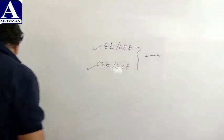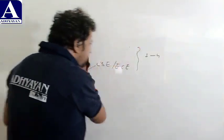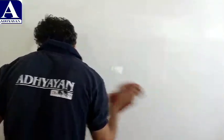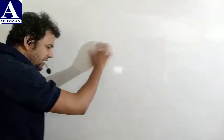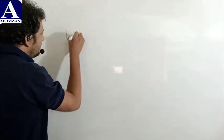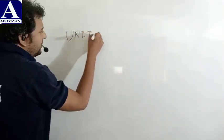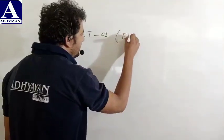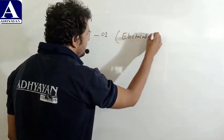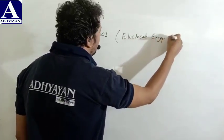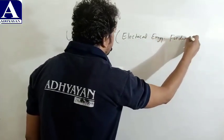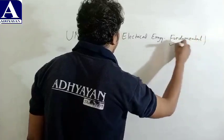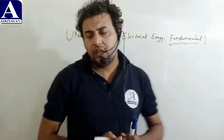तो start करते हैं पहला unit। First unit जो सभी branches में common है - double E, triple E, CSE और ECE - उसका नाम है Electrical Engineering Fundamentals। नाम में ही है fundamental, मतलब पहले unit में आपको basics पढ़ने हैं।